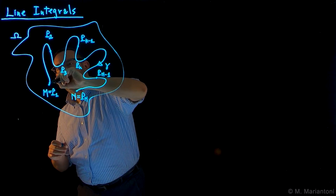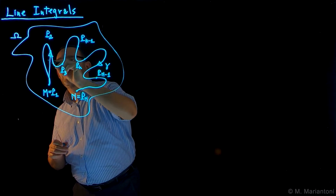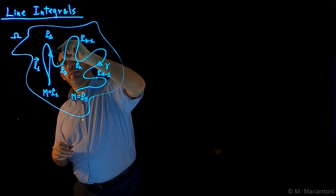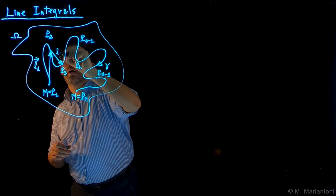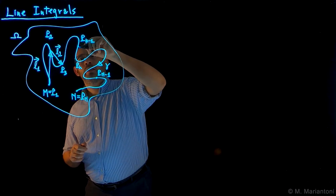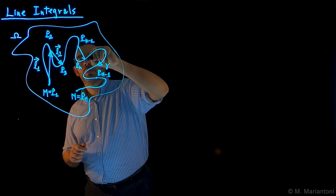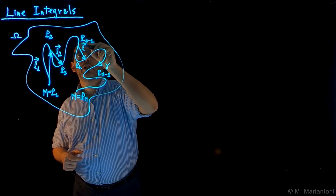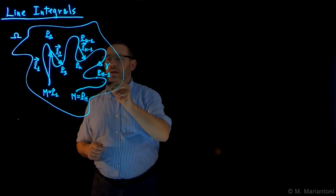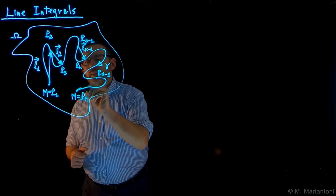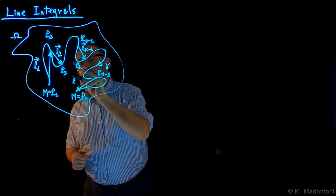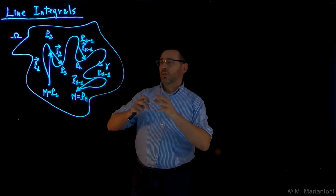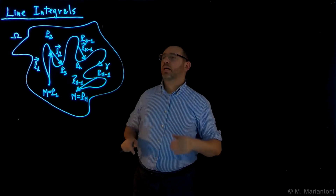The first segment we call L1, the second segment L2. The segment connecting P(k-1) with Pk we call vector L(k-1), and finally these two points are connected by means of vector L(n-1) until we reach point N. So these segments approximate my continuous line gamma.